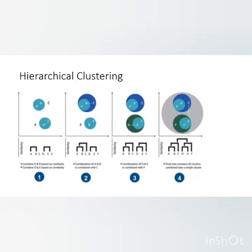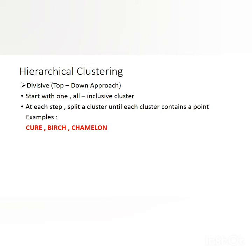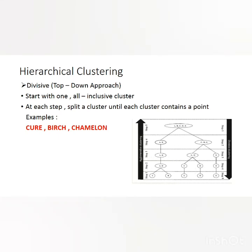In hierarchical clustering, we arrive at a hierarchy. The agglomerative method is called the bottom-up approach and the divisive method is called the top-down approach. Starting with one cluster, we include all clusters step by step, or we split clusters until we reach a single cluster containing one point. Examples of hierarchical clustering include CURE and BIRCH. In the diagram, starting from the root going down, we have level one, level two, level three, and further levels.